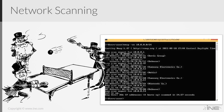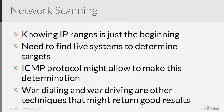Nmap also gives you the MAC addresses. So network scanning is about determining what's live in that network and what we can use. Knowing the IP ranges is just the beginning — the fact that you know an IP range doesn't mean every IP in that range has something interesting. You need to find the live systems and determine potential targets. The ICMP protocol might help. War dialing and war driving are other techniques that might return good results. We're going to learn about that in our next lesson focused on finding live systems.